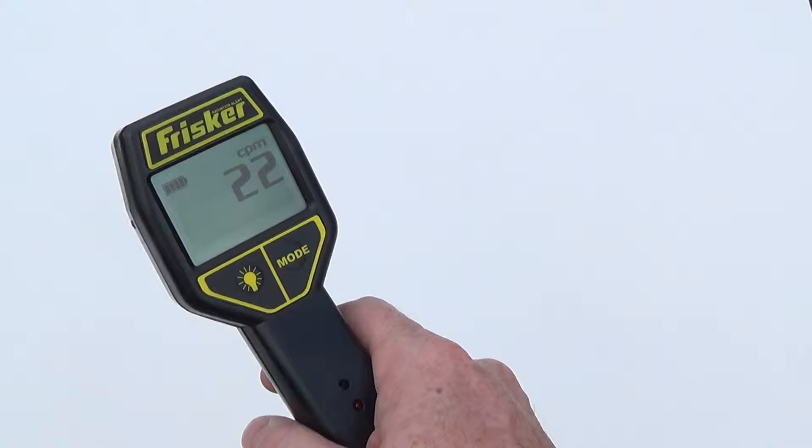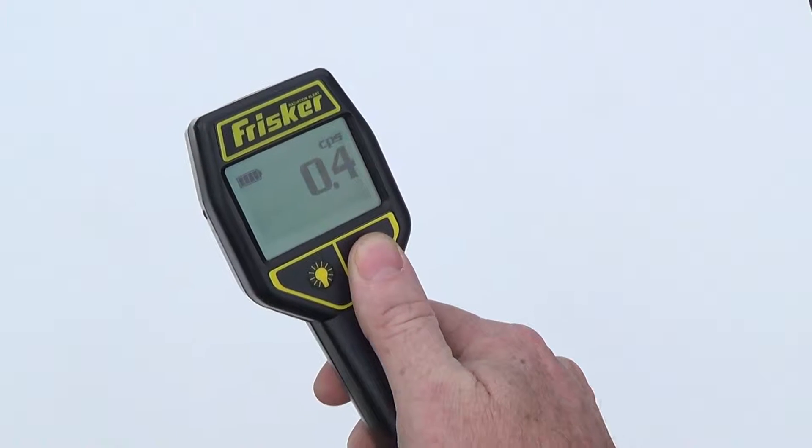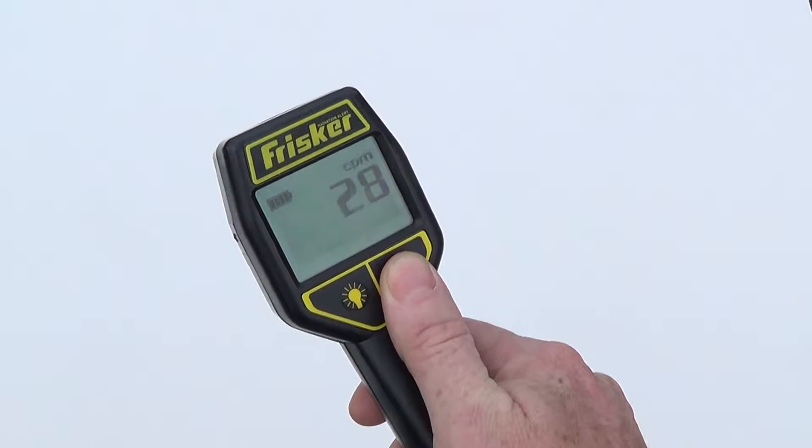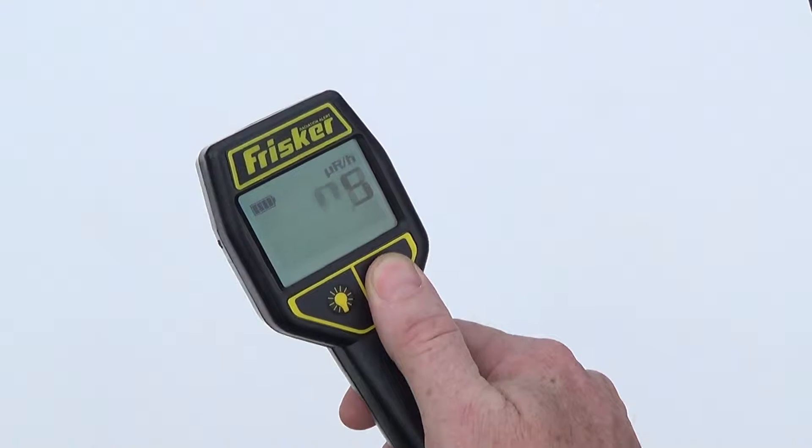To change the unit of measurement, press the mode button and cycle through the conventional units until you have reached the unit of measurement that you would like to use.